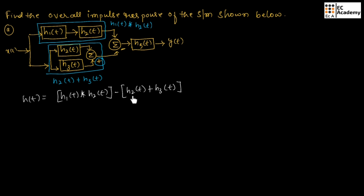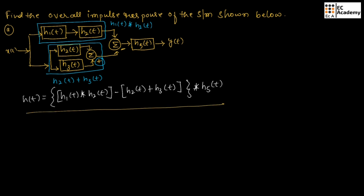Now, this system is in cascade with this impulse response. So, we can write this system convoluted with H5 of t. This is the overall impulse response of the given system.